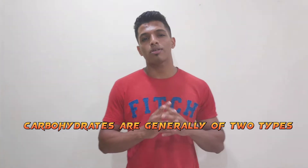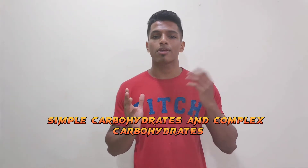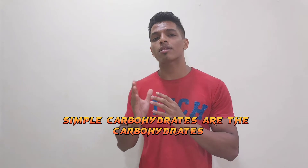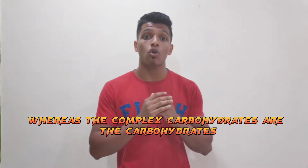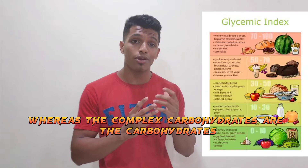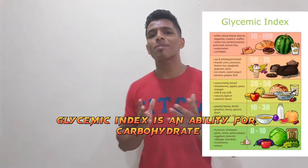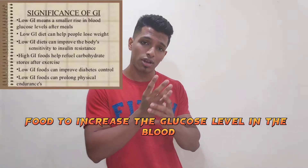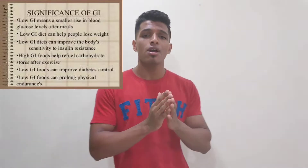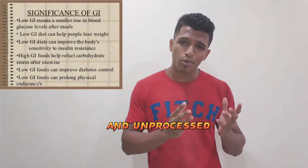Carbohydrates are generally of two types: Simple Carbohydrates and Complex Carbohydrates. Simple Carbohydrates are the carbohydrates which generally have a high Glycemic Index, whereas Complex Carbohydrates have a low Glycemic Index. Glycemic Index is the ability of a carbohydrate food to increase glucose level in the blood.